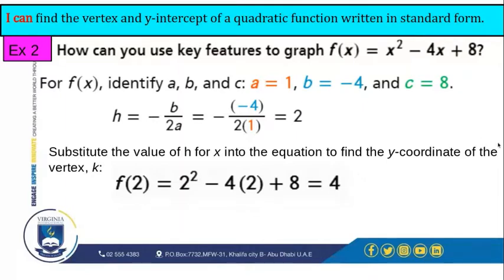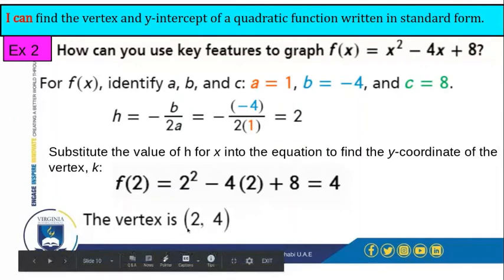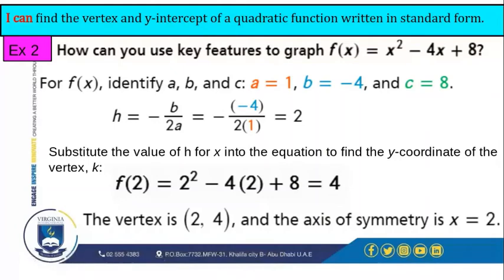Now we found the vertex, which is (2, 4). How do we find the axis of symmetry? The axis of symmetry is just simply the value of h, or you could say the value of x. So the axis of symmetry is x = 2.